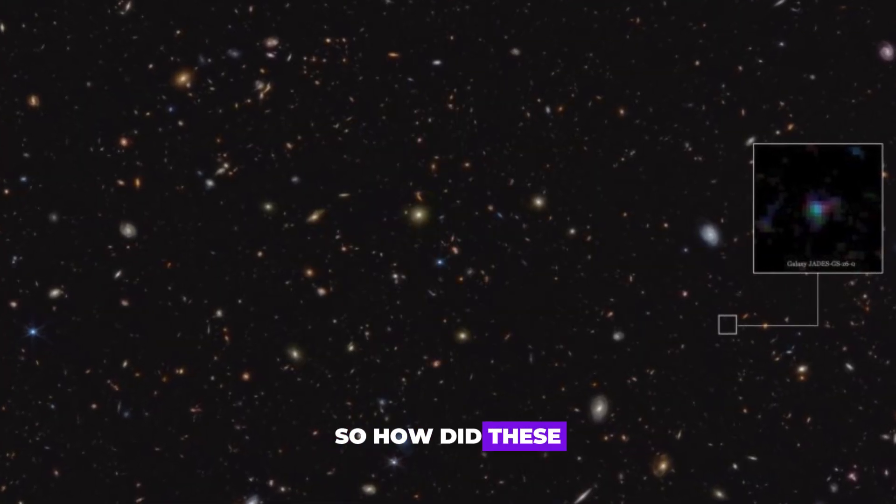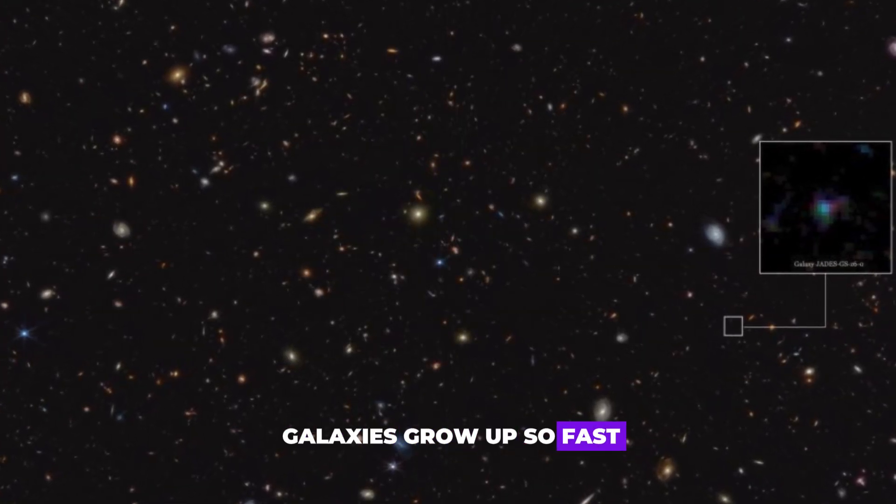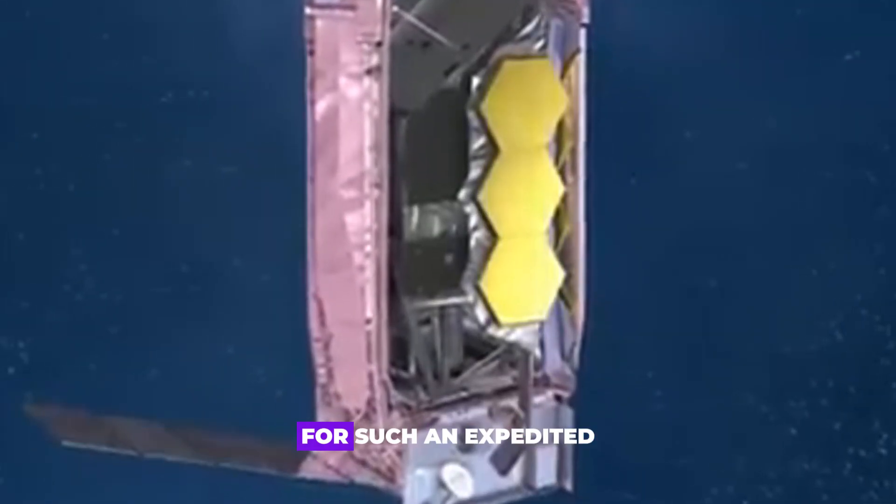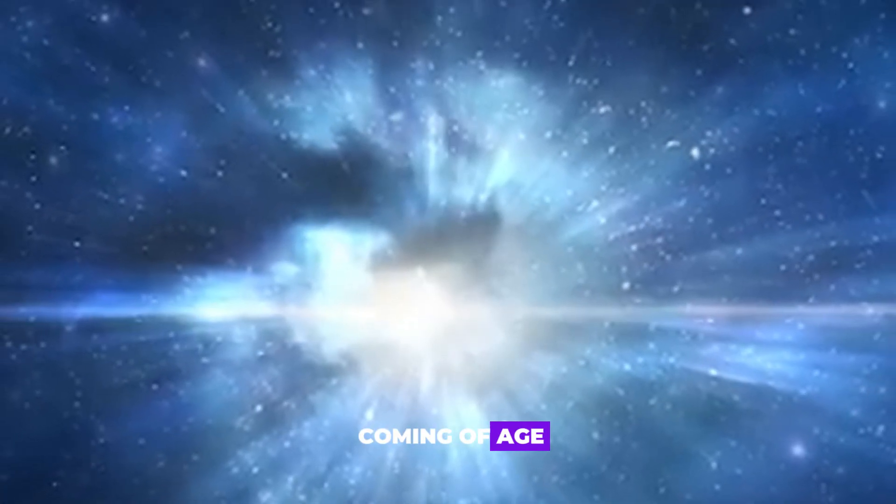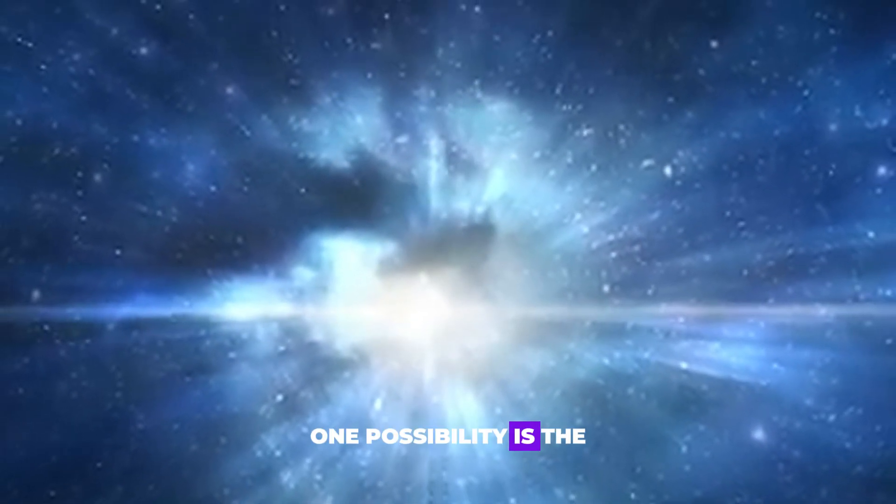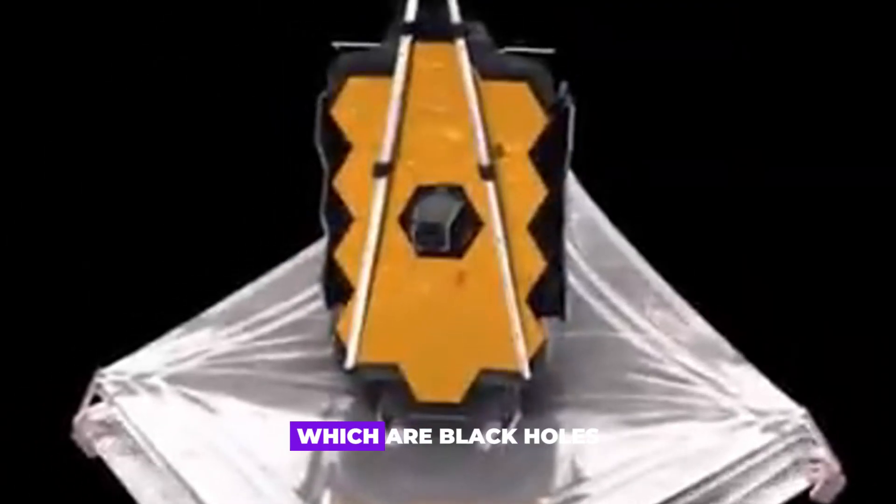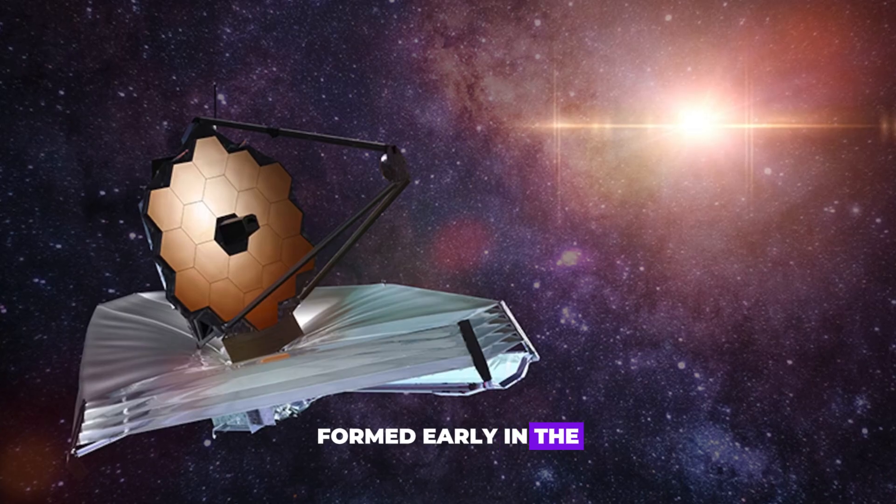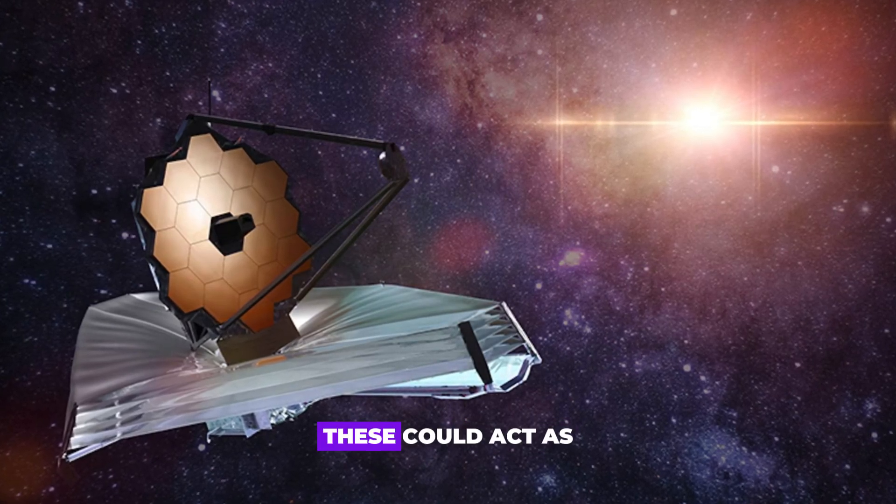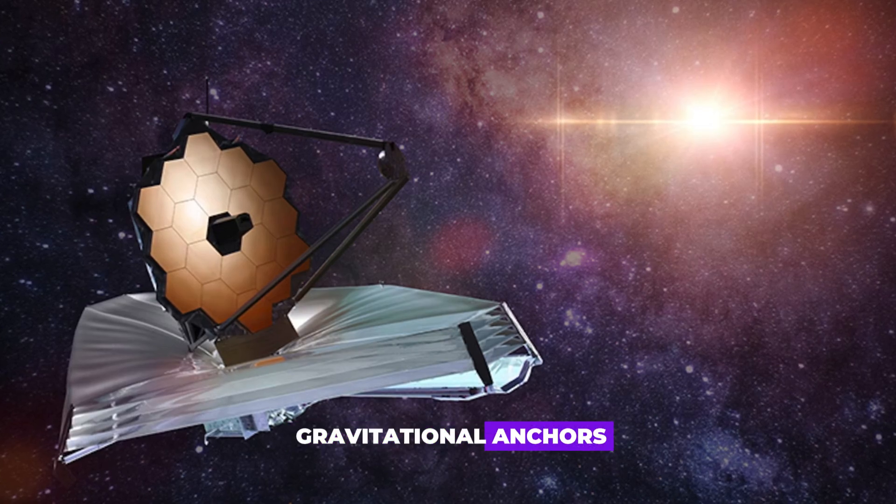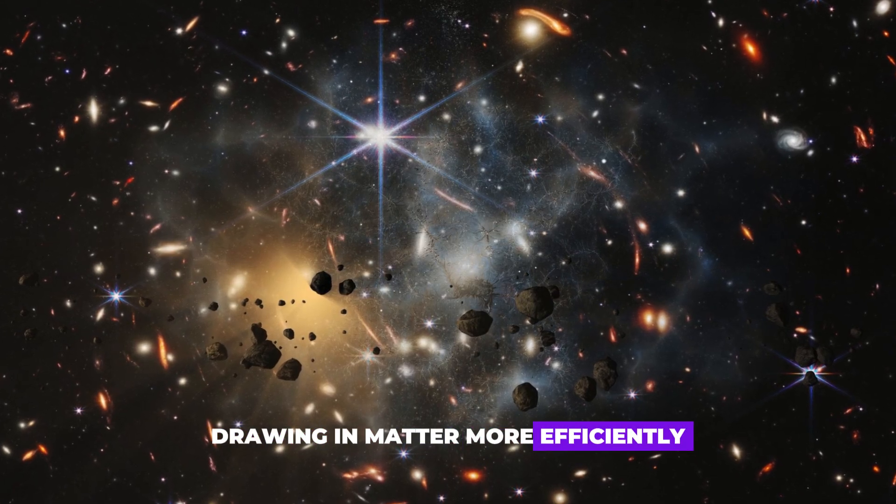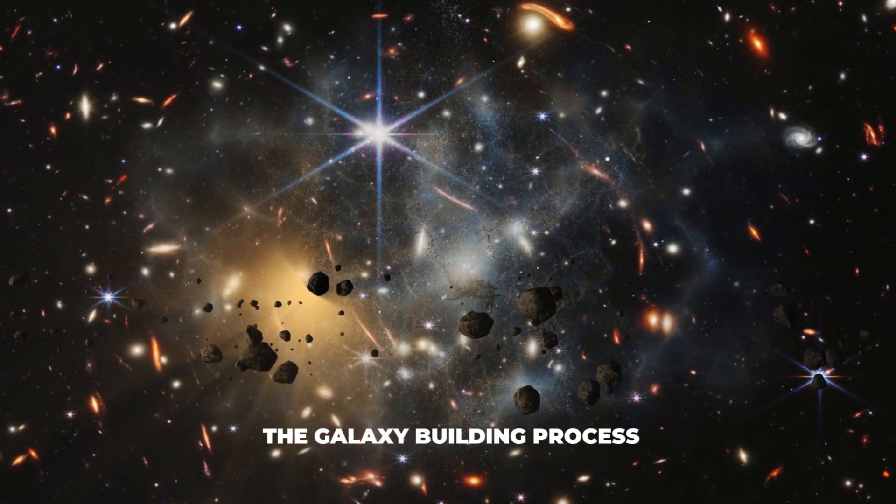So how did these galaxies grow up so fast? What cosmic recipe allowed for such an expedited coming of age? One possibility is the role of seed black holes, which are black holes formed early in the universe's history. These could act as gravitational anchors, drawing in matter more efficiently and thus speeding up the galaxy-building process.